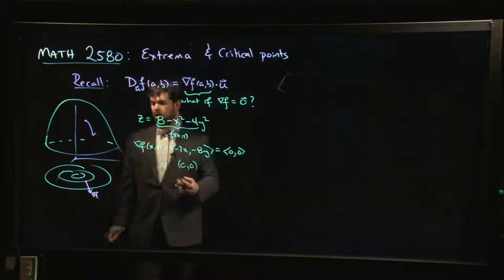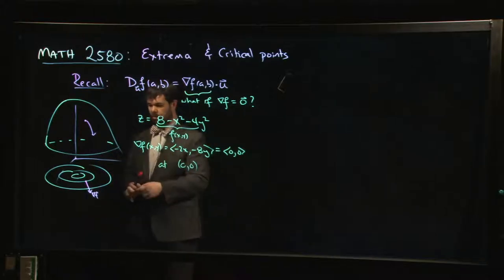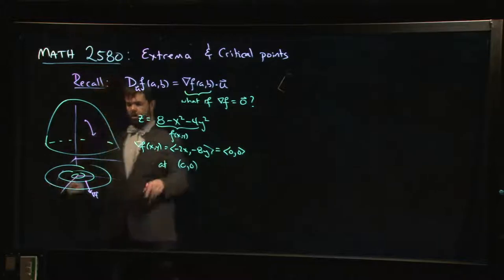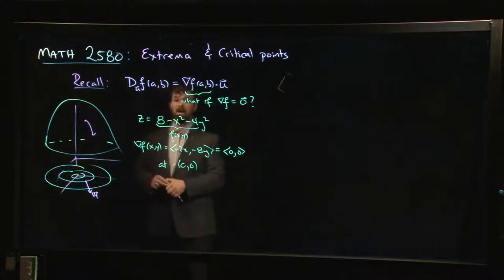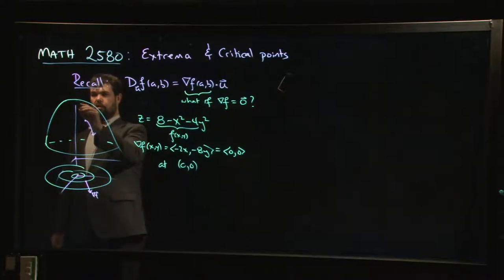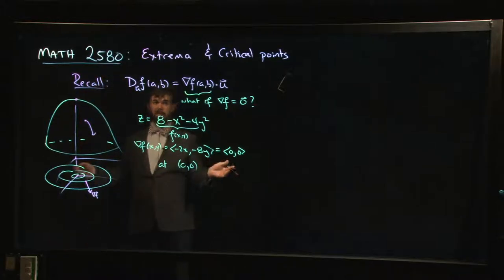We get the zero vector at the origin. I know I didn't draw things as well as I should have here. The origin should be like here. Where does that point, that origin, where does it correspond to? It corresponds to this point here at the very top of our hill.